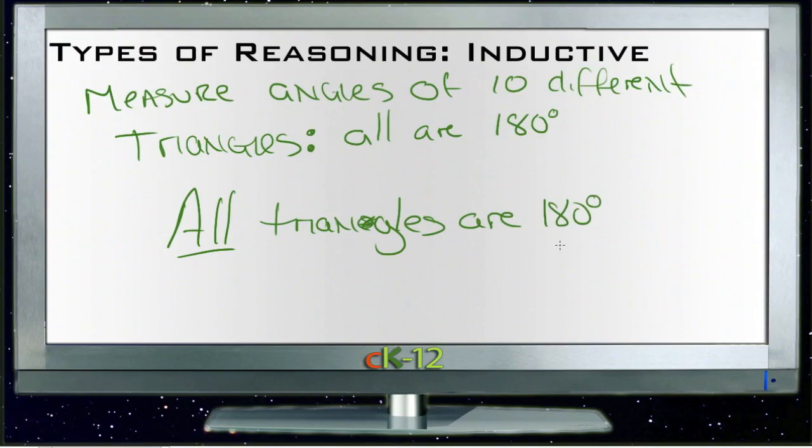So that would be an inductive reasoning step - the step going from a bunch of examples of something to saying that because of that, all of those things are whatever it is you measured. In this case, 180 degrees; in the previous case, red candy. So inductive reasoning starts with specific examples and moves to more general examples.